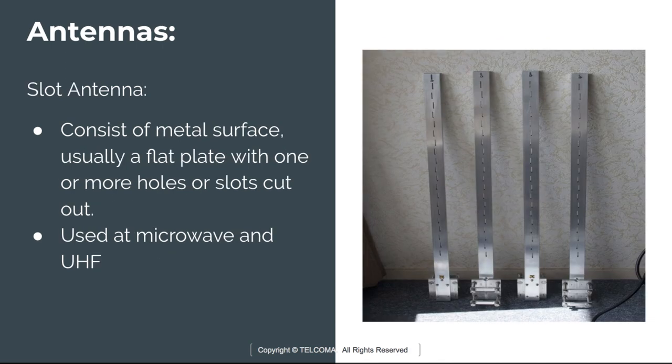The slot antenna consists of a metal surface — usually a flat plate — with one or more holes or slots cut out. When the plate is driven by a driving frequency, the slots radiate EM waves in a manner similar to a dipole antenna. Slot antennas are used at ultra high frequencies and microwave frequencies.